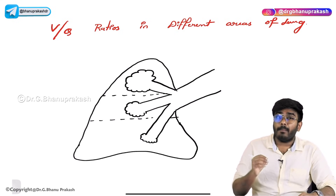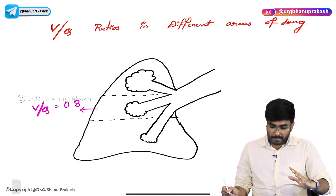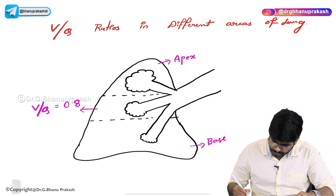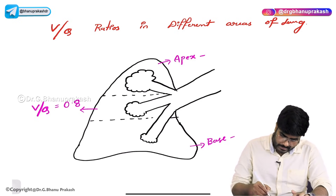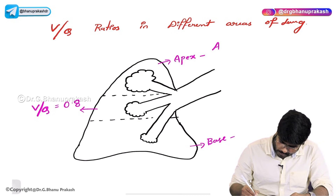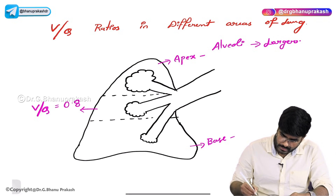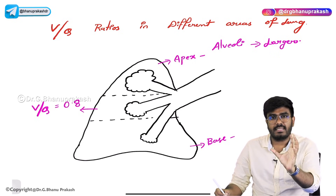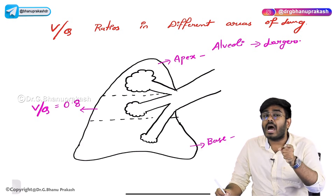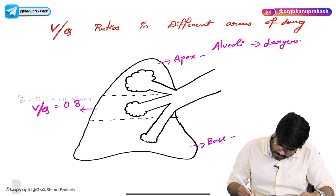In the middle lobes, the ventilation-perfusion ratio is 0.8. But in the apex of the lung it is different. In the apex, alveoli are larger in size. Whenever they are large in size, can you further stretch them? No. So the alveoli in the apex of the lung have less compliance. They are less compliant because they are already open and already stretched — you cannot further stretch them.